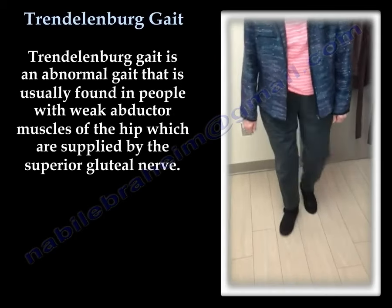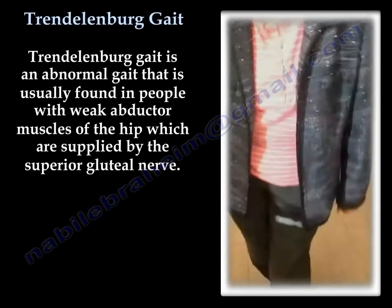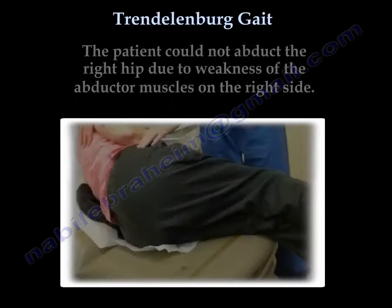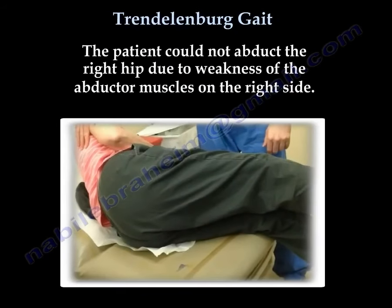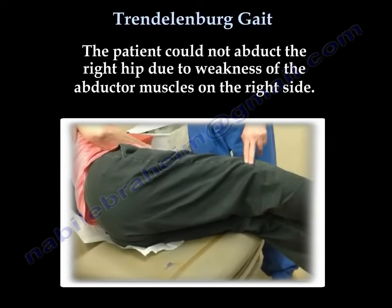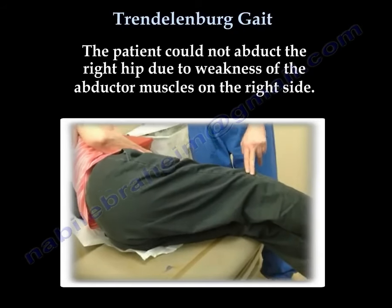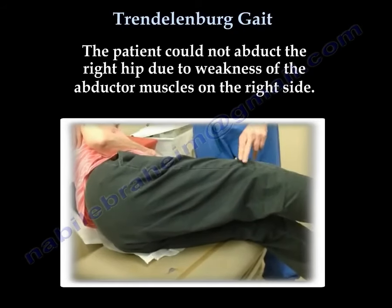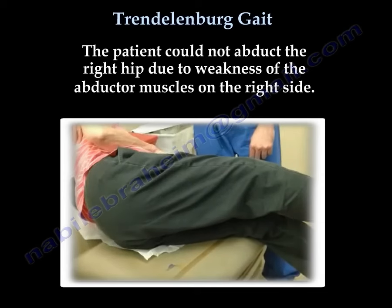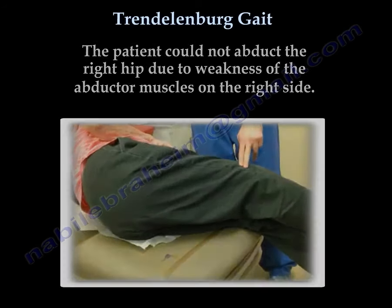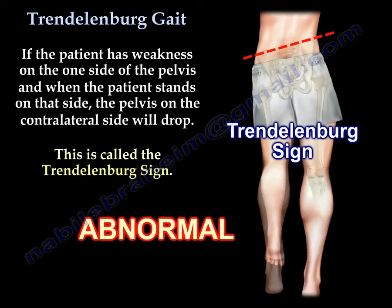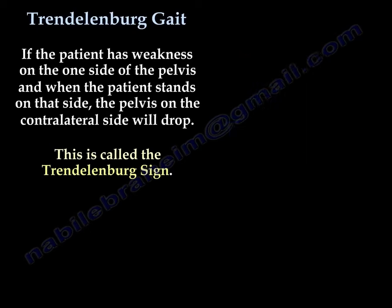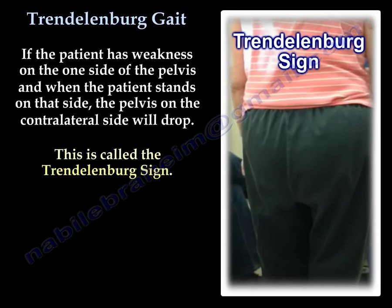Here you can see a patient example of Trendelenburg gait. The patient could not abduct the right hip due to weakness of the abductor muscles on the right side. If the patient has weakness on one side of the pelvis and stands on that side, the pelvis on the contralateral side will drop. This is called the Trendelenburg gait.